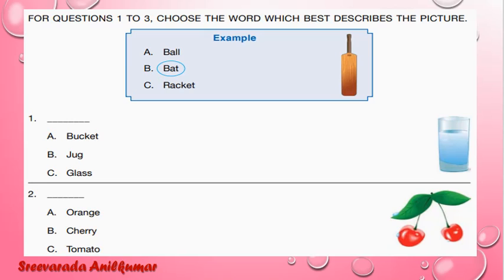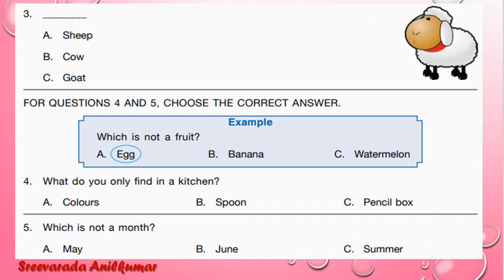The first question in this question paper is: Choose the word which best describes the picture. This is a glass, so the answer is C. This is a cherry, the answer is D. This is a sheep, the answer is A.